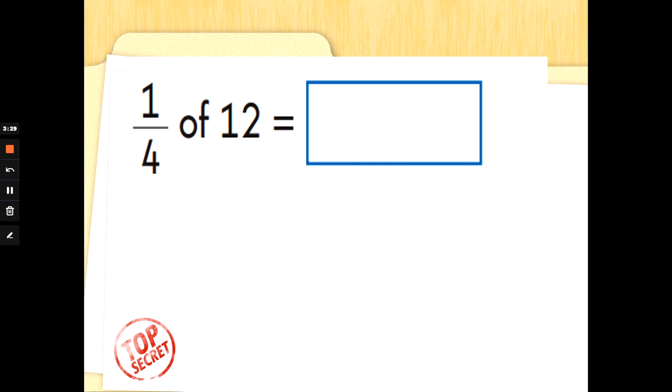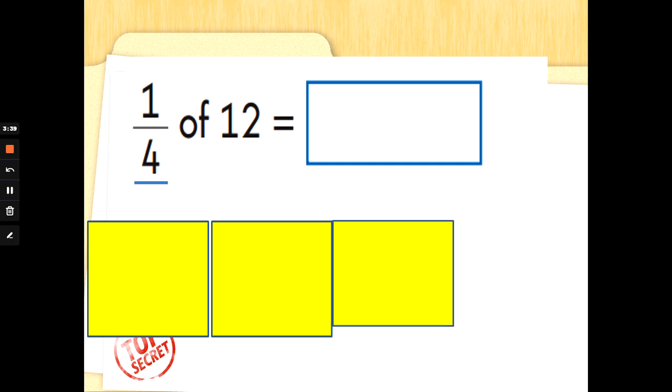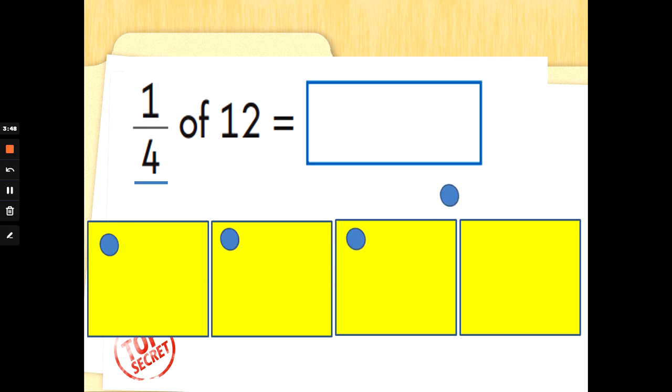OK. Now this one says 1/4 of 12. So we need to draw 4 boxes. Because the bottom number of the fraction, the denominator, tells us that. So let's draw 4 boxes. And now we need to share 12 out. Off we go: 1, 2, 3, 4, keep going, 5, 6, 7, 8, 9, 10, 11, 12. Now the top number is 1. So you only need to tell me how many dots are in 1 box to find 1/4. That's right. 1/4 of 12 is 3. Well done, guys.